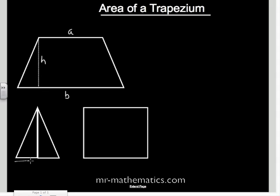Now the base of our triangle must be the difference between the two parallel sides. So the base would be B minus A and the height we will call H.